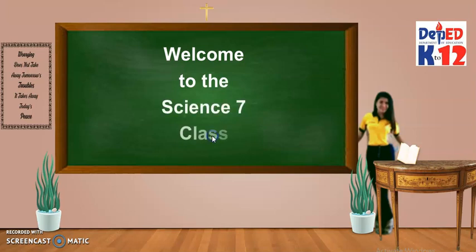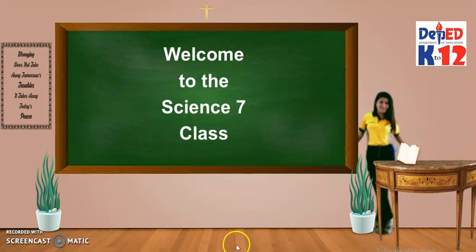Welcome to Design 7 class. In our first module, it will expose you to the world of scientists. How do scientists work? How do they solve problems? In most cases, scientists solve problems by making thorough investigations. This process seeks to answer questions that are essential in science, guided by the scientific method.